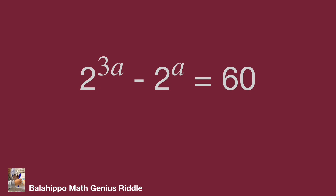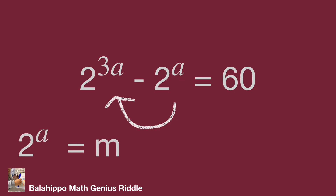In the given equation, 2 power of 3a plus 2 power of a equals 60. I find the power values for 2 are a and 3a. These two items have the relationship of a cube. Therefore, let's define 2 power of a equal to m, then 2 power of 3a will become m cubed.